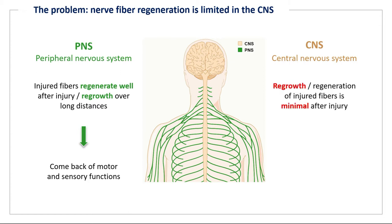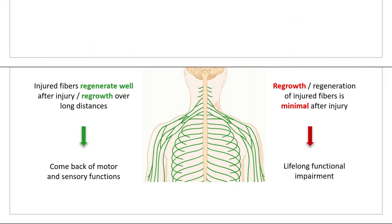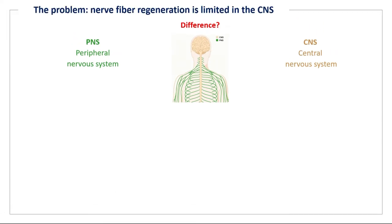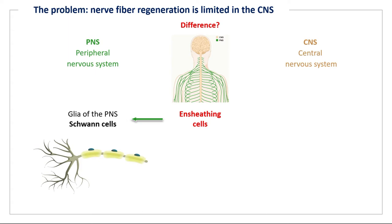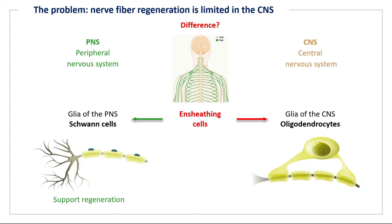This is why spinal cord injury leads to functional impairment — for instance paraplegia — which persists lifelong. One important difference between peripheral nerves and the brain and spinal cord are the ensheathing cells which ensheath and isolate every single nerve fiber. The cell type in the peripheral nerves is called the Schwann cell, and this cell is highly conducive to nerve fiber regeneration and supports regeneration. In the spinal cord and the brain, the ensheathing cell is a different cell type called oligodendrocyte. We found in our research laboratory that these oligodendrocytes and the sheaths they produce around the nerve fibers — the so-called myelin sheaths — inhibit nerve fiber growth and regeneration.